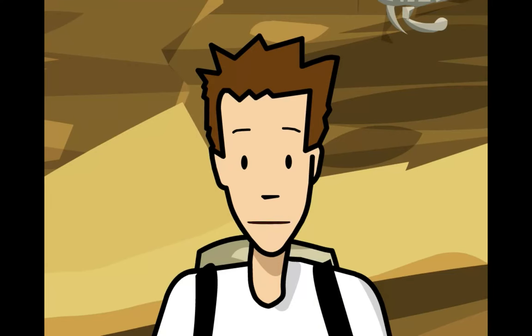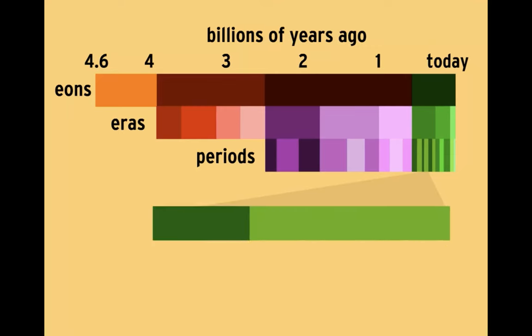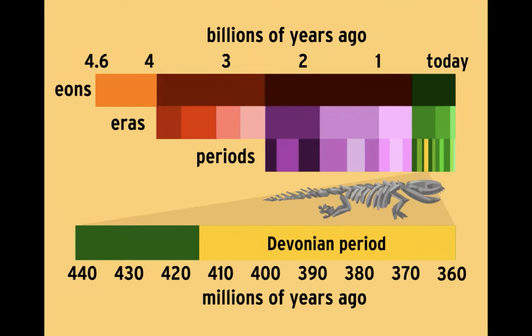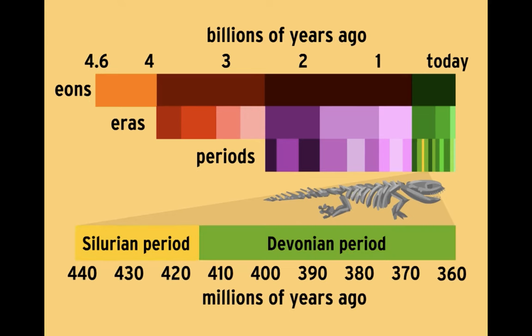For example, the Devonian period, when amphibians first evolved, lasted about 50 to 55 million years, while the Silurian period, which saw the first jawed fish, lasted fewer than 30 million years.